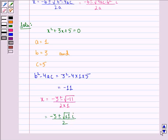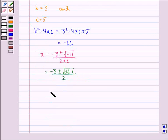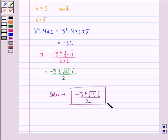Therefore, our solution to this question is (-3 ± √11·i)/2. I hope you understood the question and enjoyed the session. Goodbye.